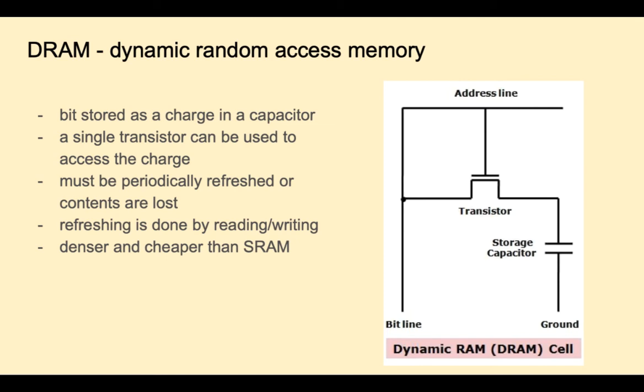To change a one to zero, the transistor is opened again to let the stored value drain out and become a zero. Because each bit only requires one transistor and one capacitor, it's cheaper than SRAM and denser. To read DRAM, the transistor is opened and the resultant value is read on the bit line. This is a destructive read. The very act of reading the bit changes its value, so it has to be rewritten again.